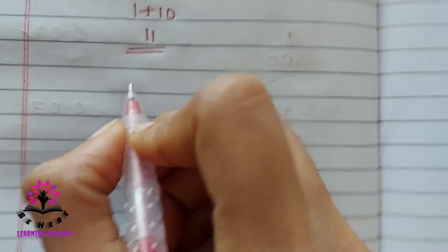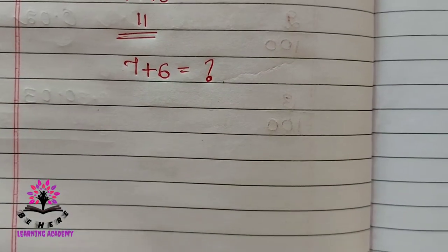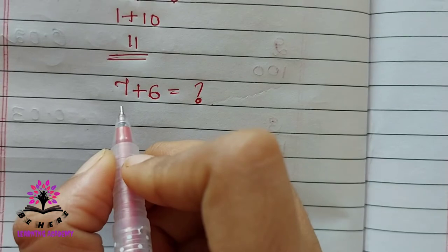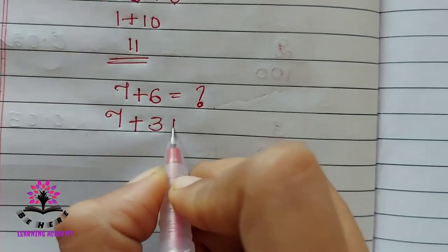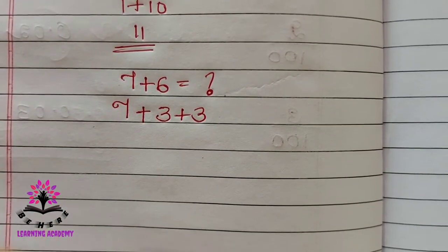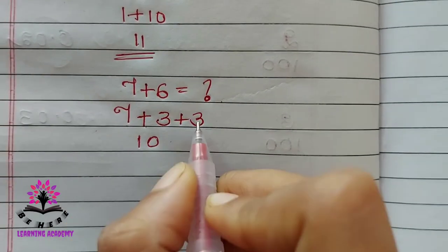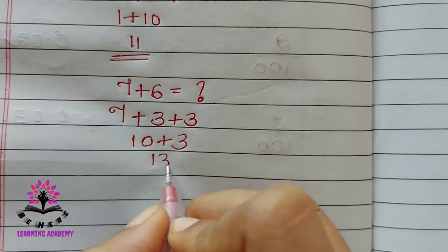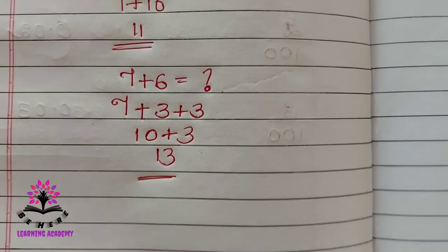Now let us solve one more problem: seven plus six is equal to how much? I will write seven as it is. Six I will write as three plus three. Seven plus three is ten, and ten plus three is thirteen. So seven plus six equals thirteen.